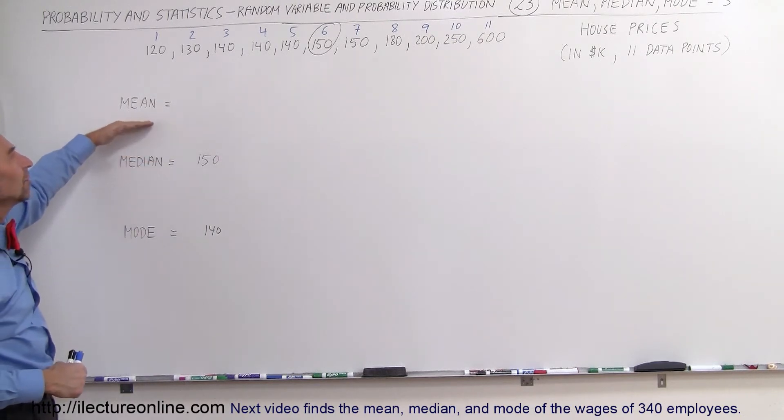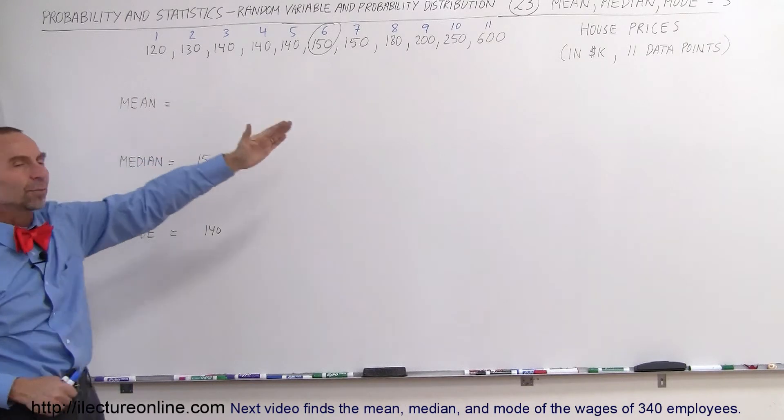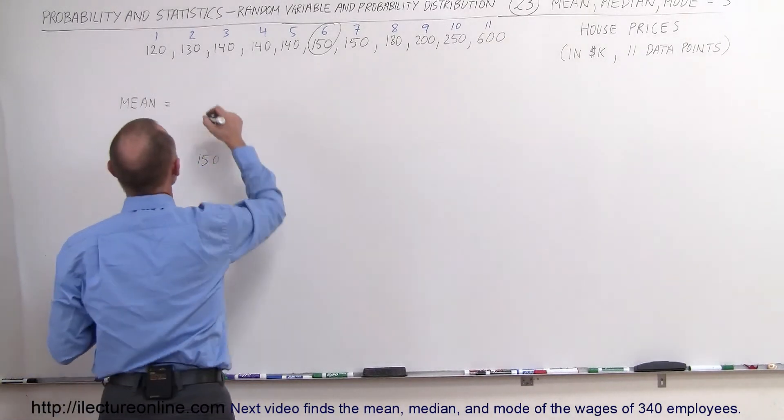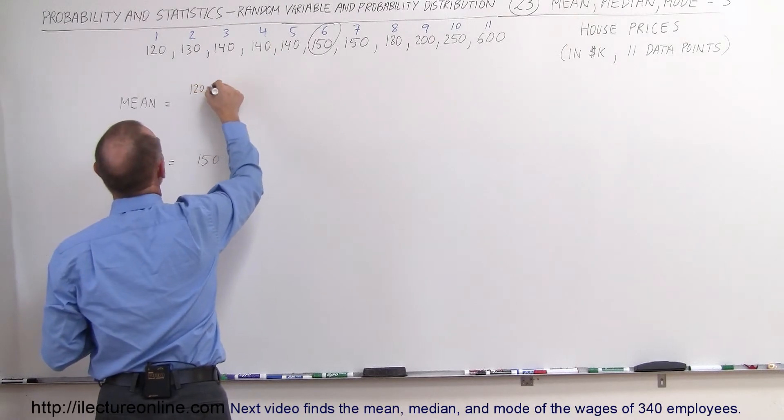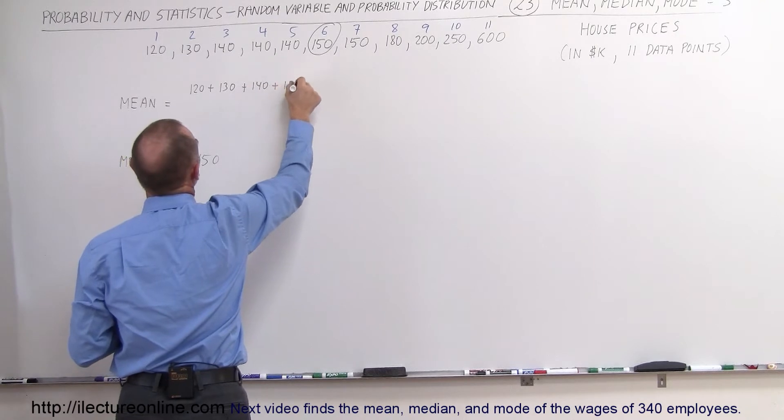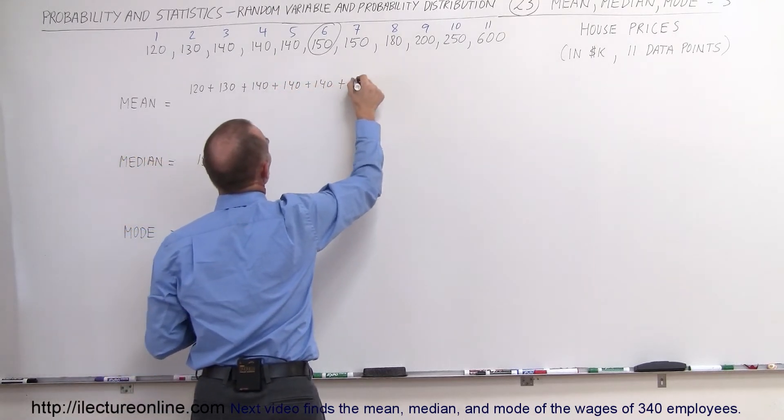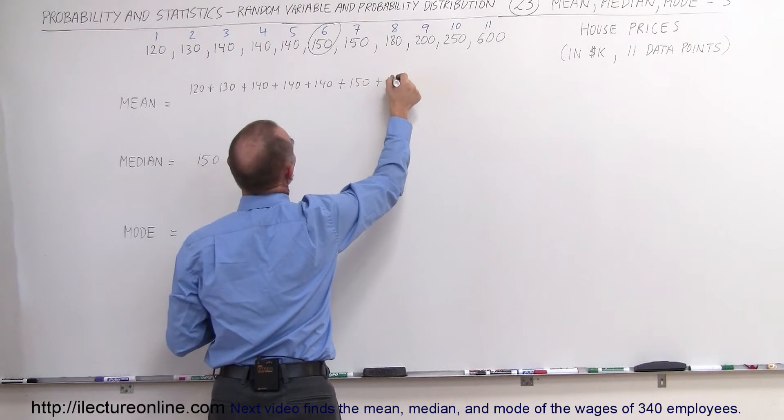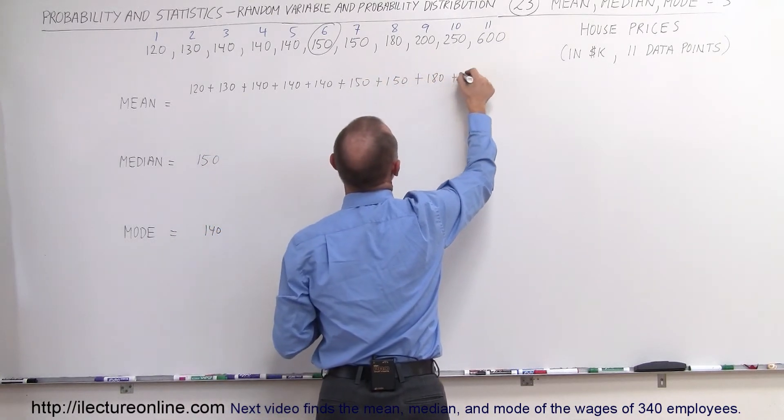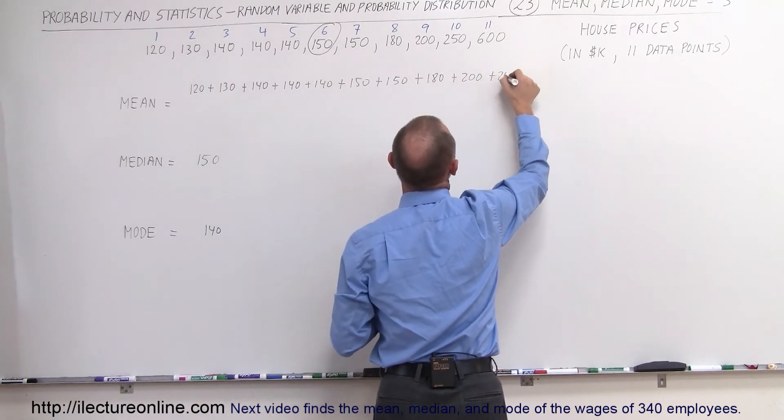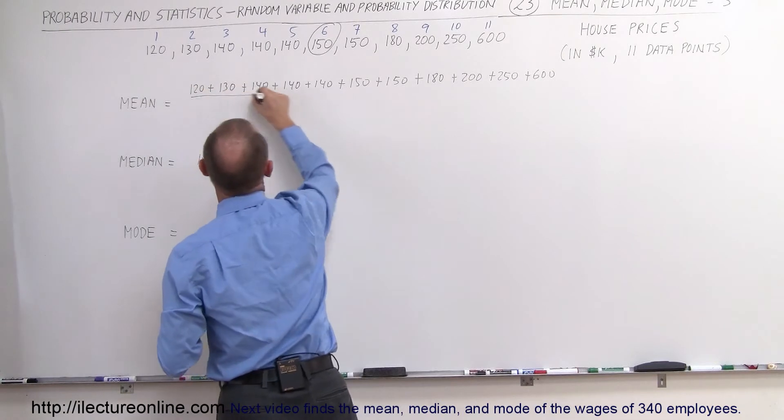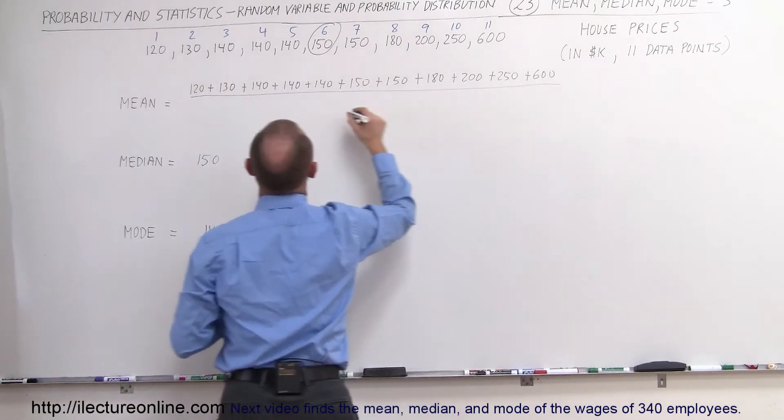But let's find out what the mean is. The mean would be adding all the house prices together and dividing by the total number of data points, which would be 11. So in this case the mean would be 120 plus 130 plus 140 plus 140 plus 140 plus 150 plus 150 plus 150 plus 180 plus 200 plus 250 plus 600, the whole thing divided by 11.